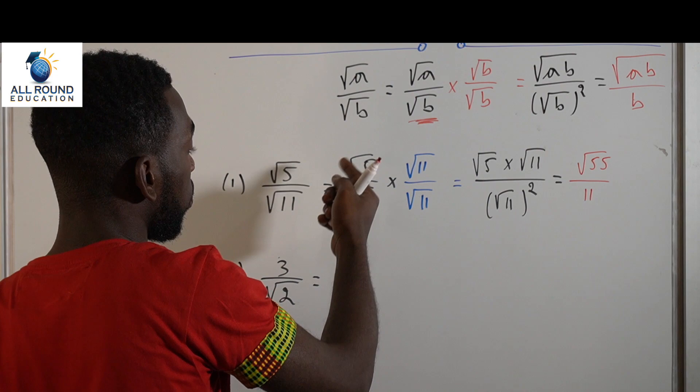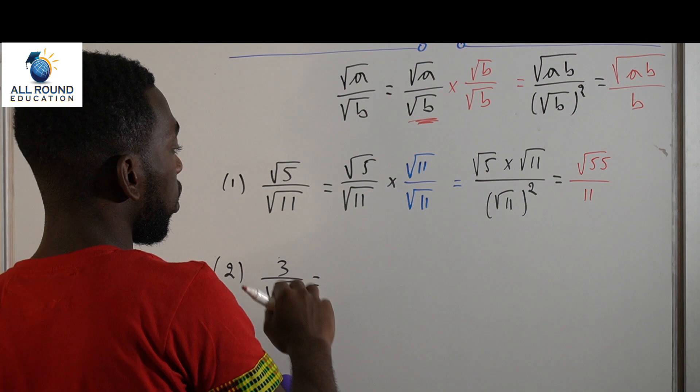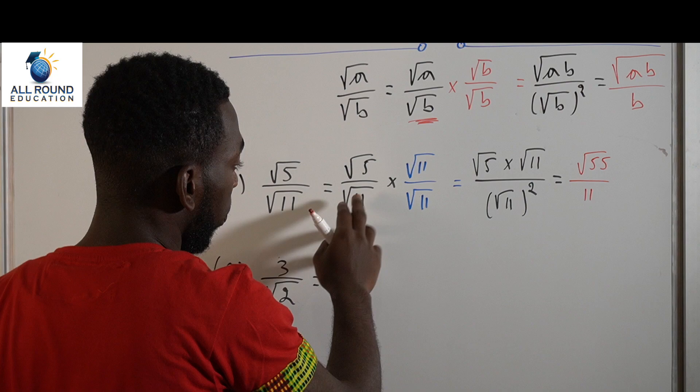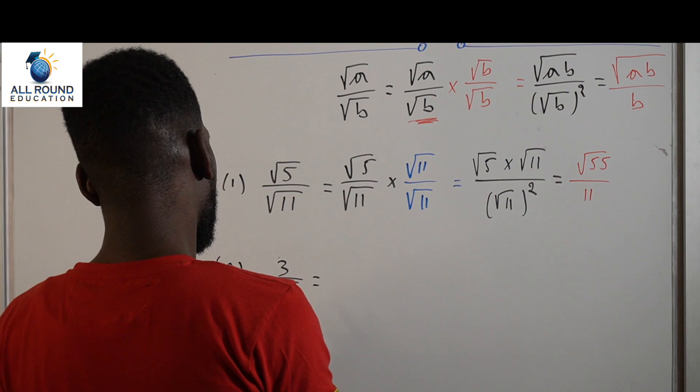Now, think about this. We did not care about the root 5 because it's in the numerator, but at the end of this question we are trying to rationalize the denominator. So we are only interested in the denominator, which is root 11 — trying to get rid of the root 11. And that's what we did.